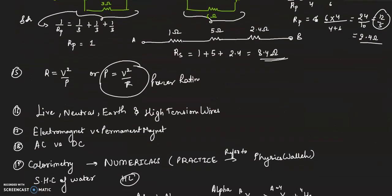Now R is equal to V square by P, or the power rating formula is V square by R. Numericals based on this are asked. Then in household circuits: live, neutral, earth wire color coding, high tension wires, please have a look on them.